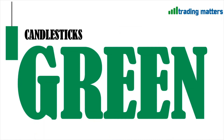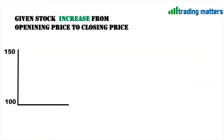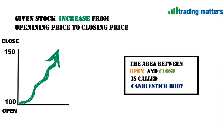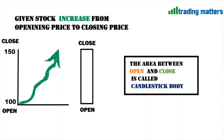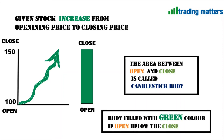Green color candlestick — let's see how green color candlestick formation takes place. In case one, the stock is increasing with open price 100 and close price 150. The area between open and close is called the candlestick body. The body is filled with green color if open is below the close — that is, if the open price is lower than the close price, that candlestick body is filled with green color.